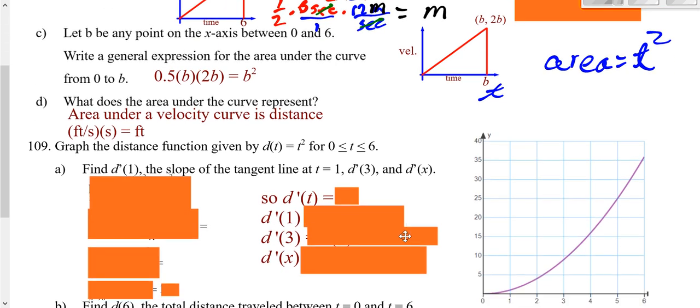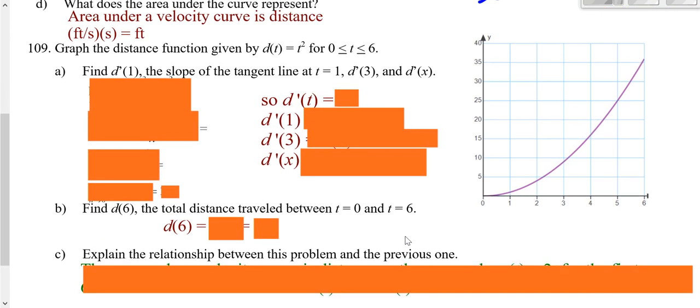Now, switching gears in 109, you're given your distance function. And so if we work this out, this should be time, this should be distance. Now you're not given units. So you could have this being like feet, you could have this being like seconds. It wouldn't make a difference. But sometimes units give you an idea of what's going on here.